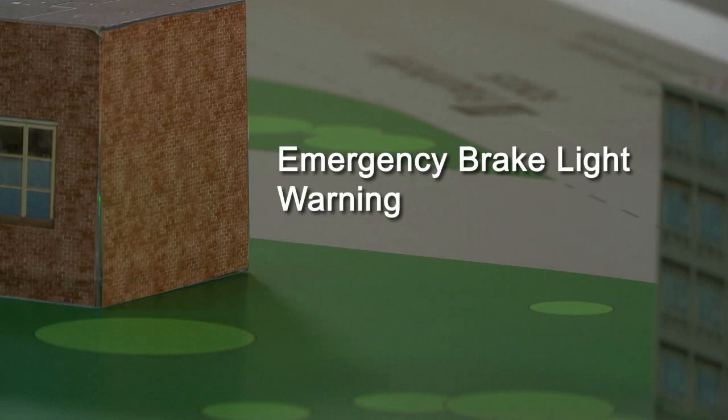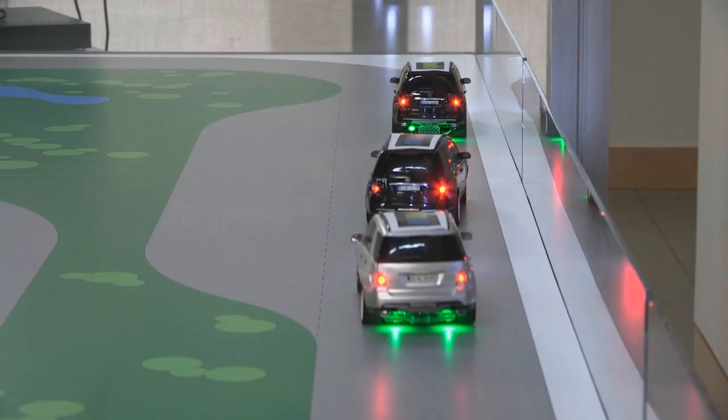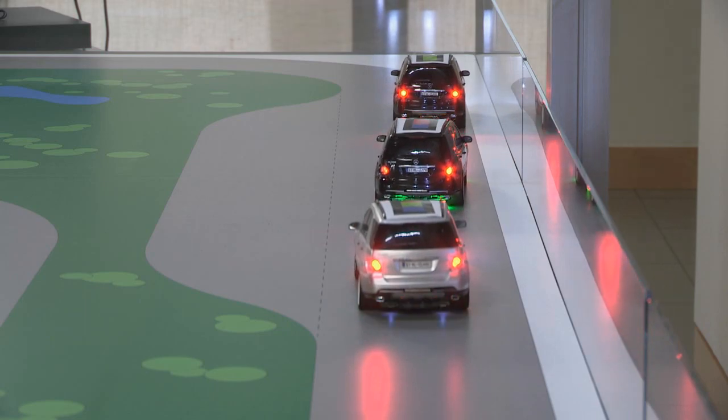This example, emergency brake light warning, gives the driver an advanced notice to brake based on signals from vehicles that are braking several cars ahead of us. Today, we often don't know to brake until we see the lights on the vehicle directly in front of us, which may not allow enough time for us to brake safely.